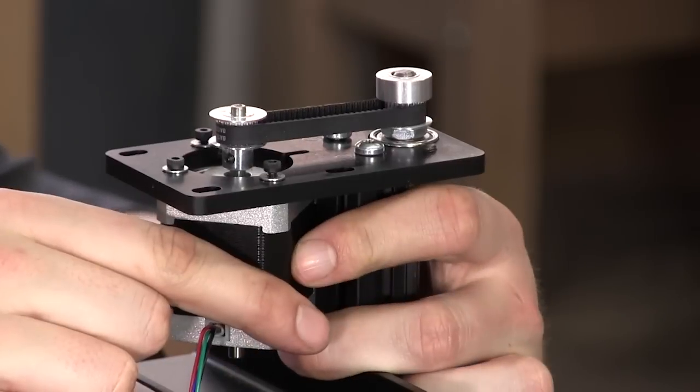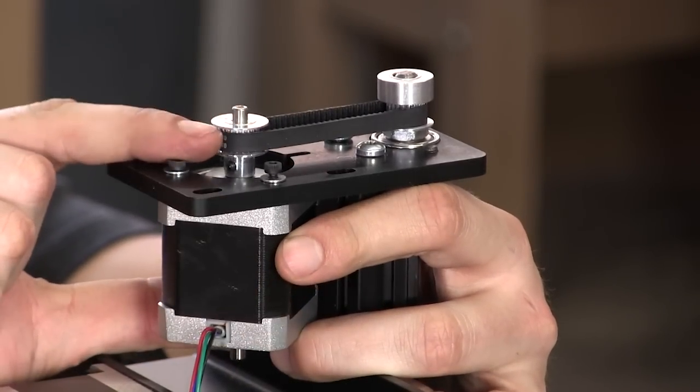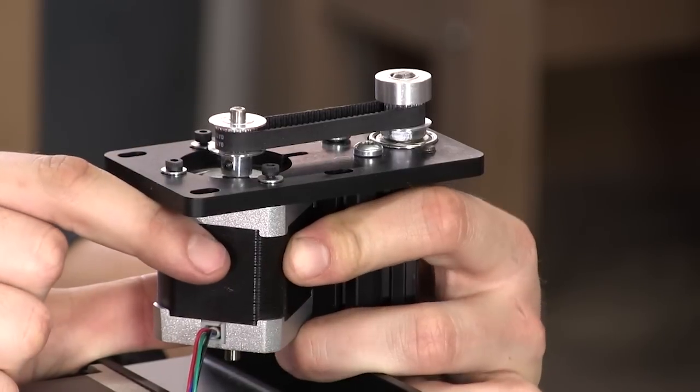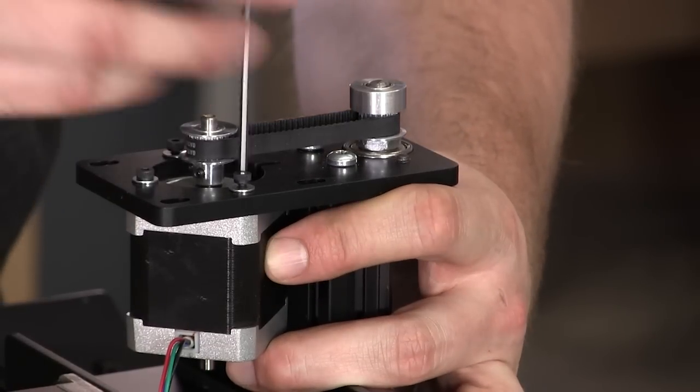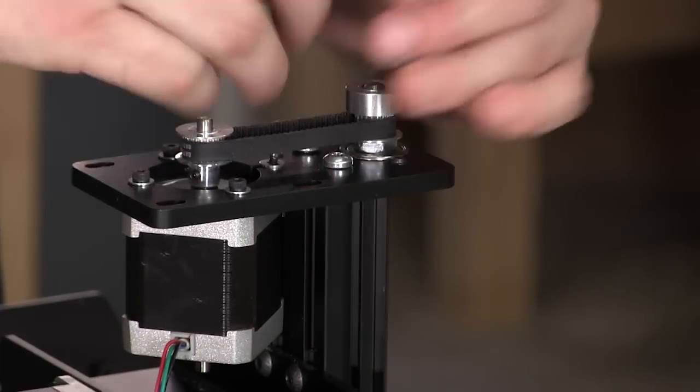Now tension the belt by applying pressure on the motor towards the back of the machine while you tighten these screws in an X pattern. Make sure that the belt is aligned and completely horizontal. If it's not, loosen the set screws on the Z-axis motor and adjust that pulley.